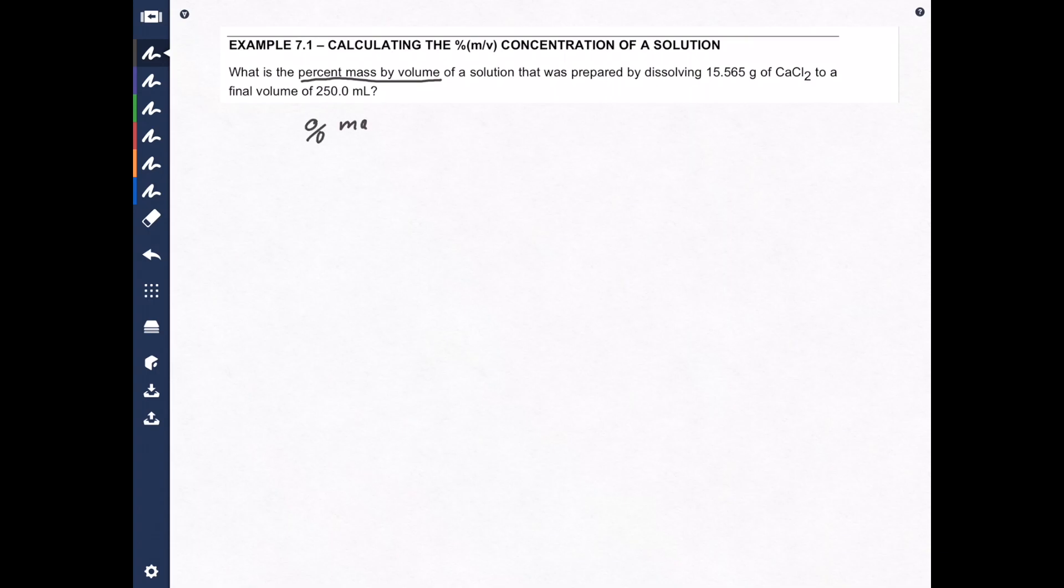Percent mass over volume is the mass of solute divided by the total volume of solution. And of course, because it's a percentage, we're going to multiply that by 100, and that is an exact number.